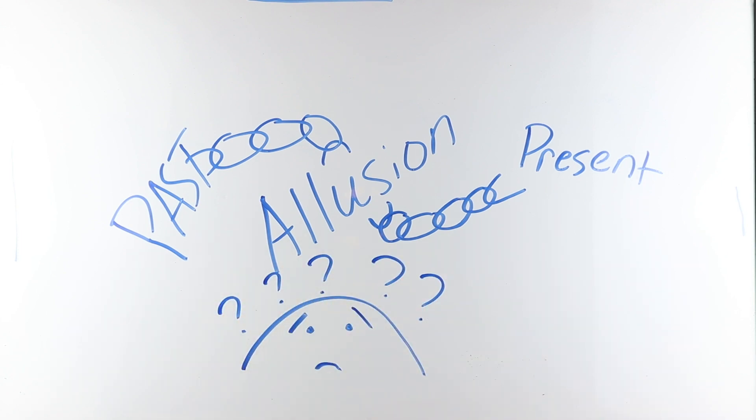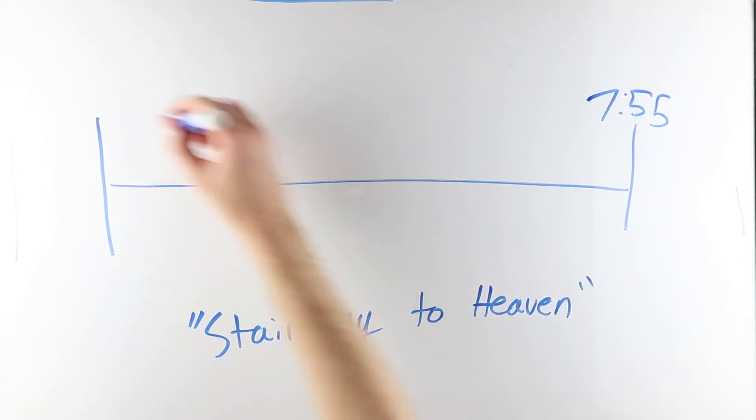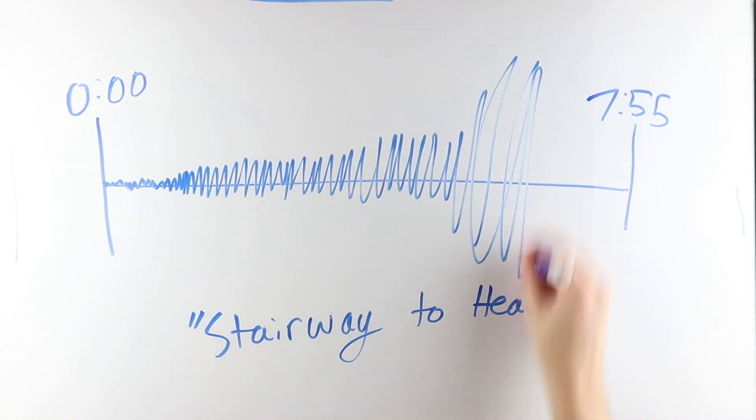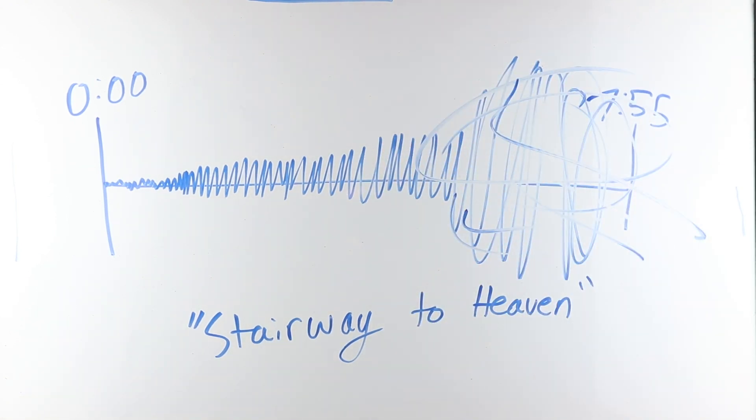The most intricate pieces of tension in Stairway to Heaven are the delicate differences in the rhythms of the verses. If you've listened to Stairway to Heaven, you know it's a 7 minute, 55 second long behemoth of a song with three distinct parts, each more intense than the last, but have you noticed that when the music changes, the cadence does too?